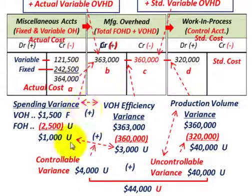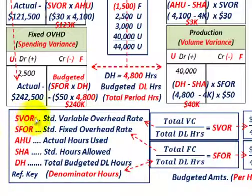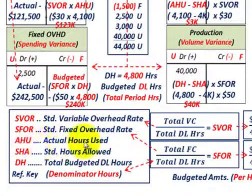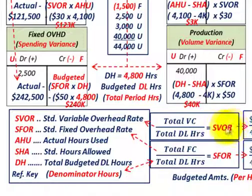Let's start with our T-accounts, but first we'll cover the reference key for our formulas. SVOR stands for standard variable overhead rate. SFOR stands for standard fixed overhead rate. AHU is the actual hours used. SHA is the standard hours allowed. DH refers to the total budgeted direct labor hours for the period, called denominator hours because they act as the denominator in our formulas to determine the standard variable and fixed overhead rates.